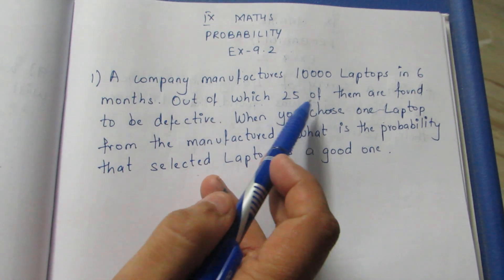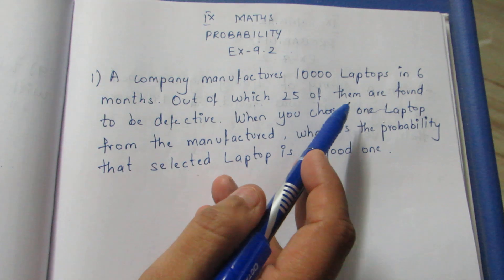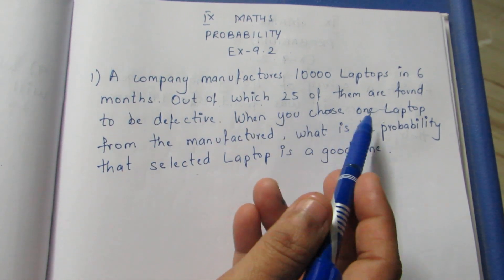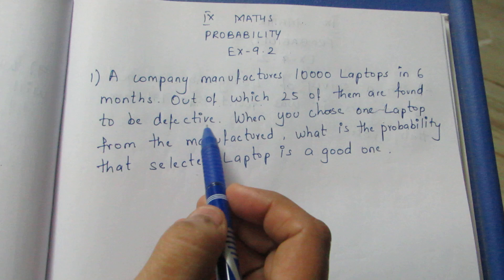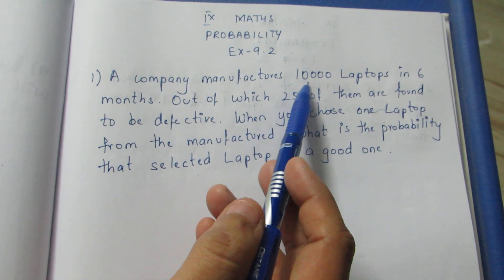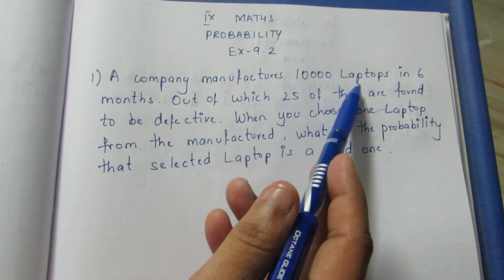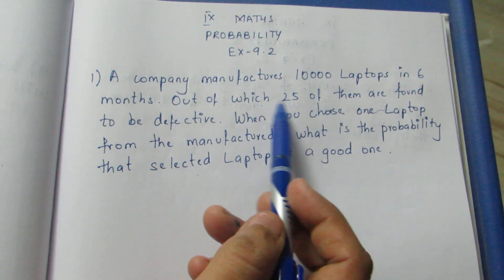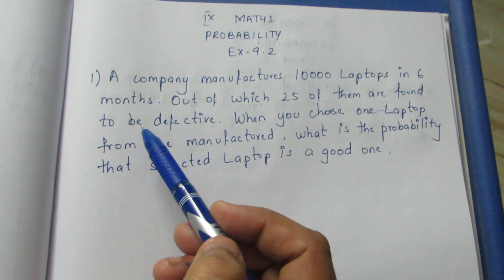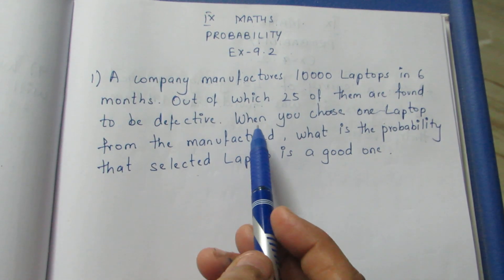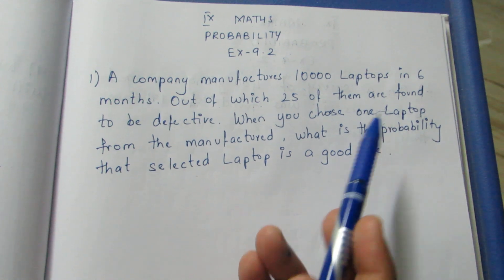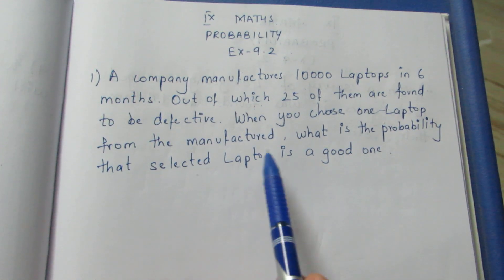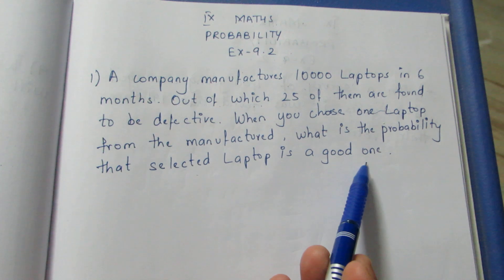A company manufactures 10,000 laptops in 6 months, out of which 25 of them were found to be defective. You produce 10,000 laptops in 6 months and 25 of them are defective. When you choose one laptop from the manufacturer, what is the probability that the selected laptop is a good one?